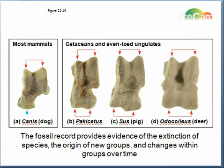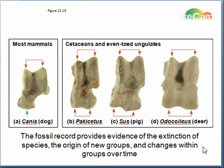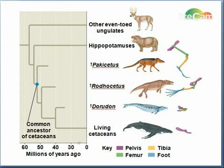The fossil record shows a lot of evidence of the extinction of species and the origin of new groups and changes within groups over time. What you're looking at here are ankle bones, which show a relationship between most mammals and cetaceans and even-toed ungulates — they all share this double-peaked formation in the bone, a hoof pattern. Fossils can also document important transitions, such as a transition from land to sea in the ancestors of cetaceans.